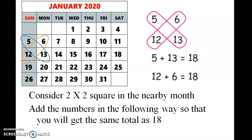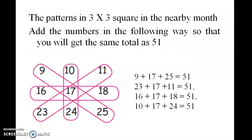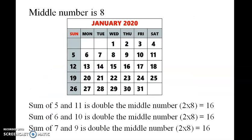In the calendar you will find patterns. Looking at January 2020, if you add along the columns or rows of the calendar, you will find the patterns. For example, adding certain numbers gives 51. Use these patterns to understand and navigate the calendar more easily.